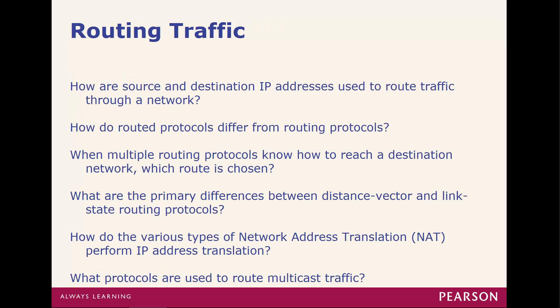So what is routing traffic? Essentially, how our source and destination IP addresses are used to route traffic. How do routed protocols differ from routing protocols? When multiple routing protocols know how to reach a destination network, how do you know which route is chosen? What are the primary differences between distance vector and link state routing? How do the various types of NAT perform IP address translation? And what protocols are used to route multicast traffic?